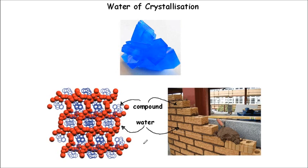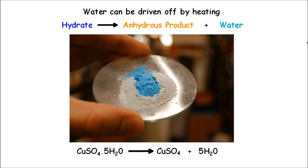If there's water present in the water of crystallization, then that can be lost — we can drive it off by drying it out, basically. So let's have a look at an example of what happens when you drive off the water of crystallization. You have the hydrate, which obviously contains water, and if you heat that, you produce an anhydrous product.